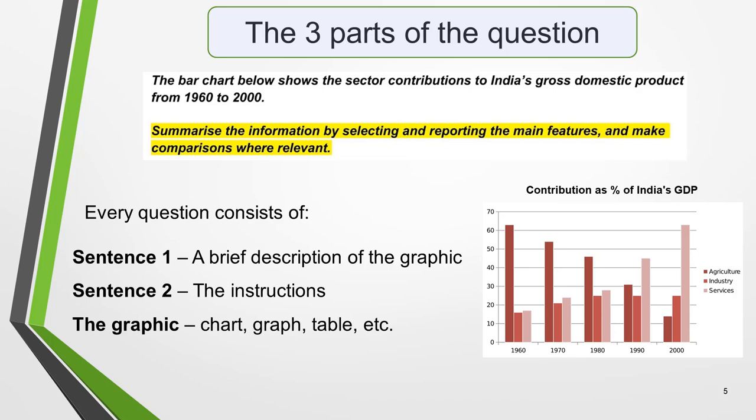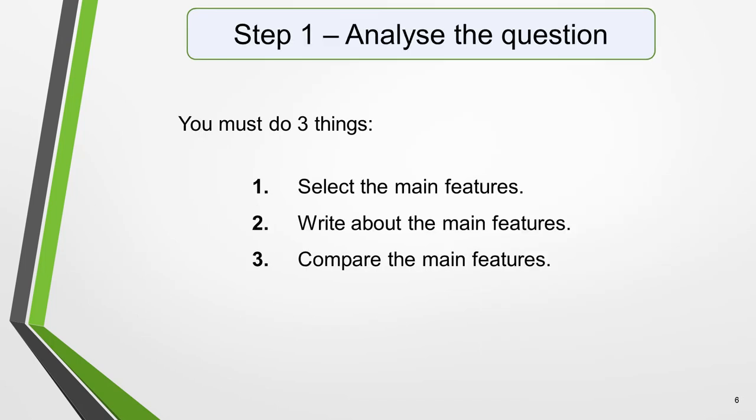Every question consists of three parts. Sentence 1, which is a brief description of the graphic. Sentence 2, the instructions — that's the highlighted part. And 3, the graphic, be it a chart, a graph, a table, etc. Sentence 2 is the one that tells you what you have to do. You must do three things: select the main features, write about the main features, and compare the main features. All three tasks refer to the main features of the graphic. You do not have to write about everything — just pick out two or three key features and you'll have plenty to write about.